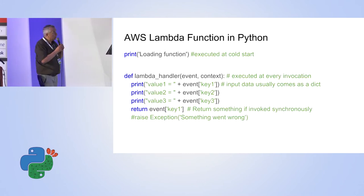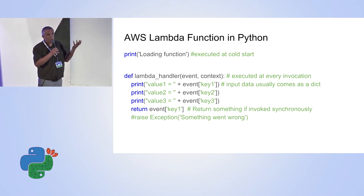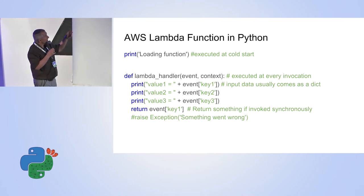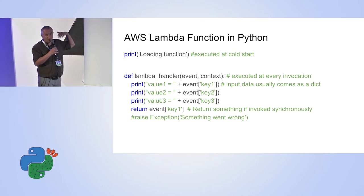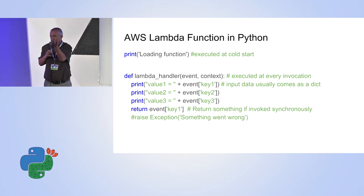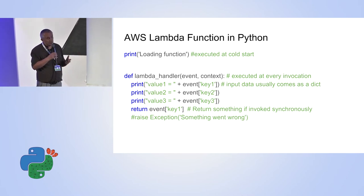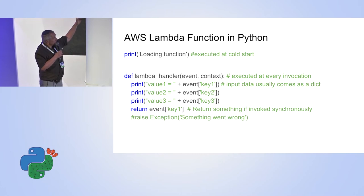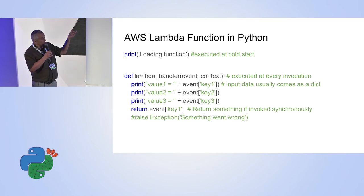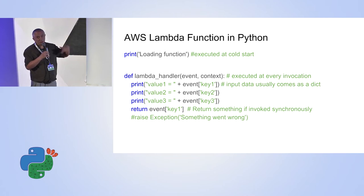This is an example of a Lambda function — the serverless computing unit — in Python. Everything which comes before the lambda handler is global definitions, performed once during the so-called cold start. Every time an instance of a Lambda function is launched, it's a setup process that takes more time and impacts latency. Everything in the scope of the function — which has a predefined interface of event (coming as a dictionary) and context — is executed at every request.